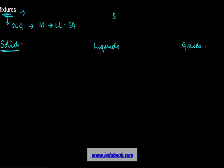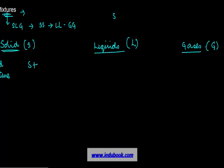I'm using S for solid, L for liquid, and G for gas. In the case of a solid mixture, there is a combination of one solid with another solid, and there could be three, four, or many more solids. When one solid combines with another solid, or two or more solids combine, it is known as a solid mixture.